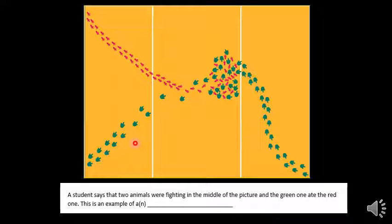Inference isn't always bad. Inference would be that these two animals were fighting, or maybe the green one ate the red one. We don't actually see that. What we see is some footprints circling around and some footprints circling around and they don't go anywhere.